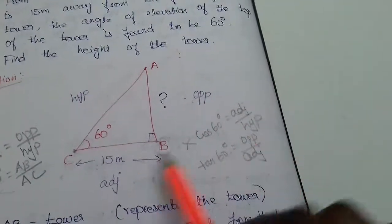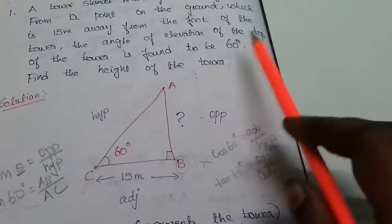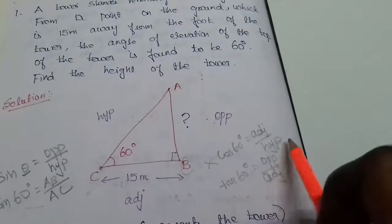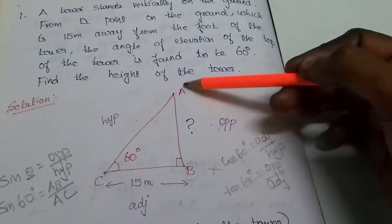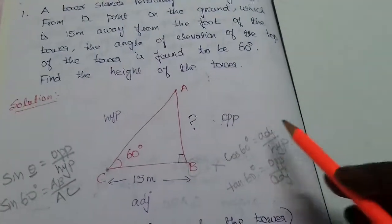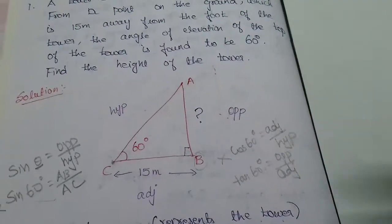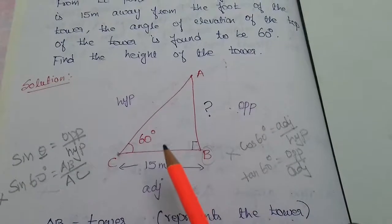Adjacent side 15 meters, hypotenuse but we don't know. Adjacent side, hypotenuse we don't know. AB, that is opposite side, height of the tower. So use tan. Next trigonometric ratio, tan 60 degrees.